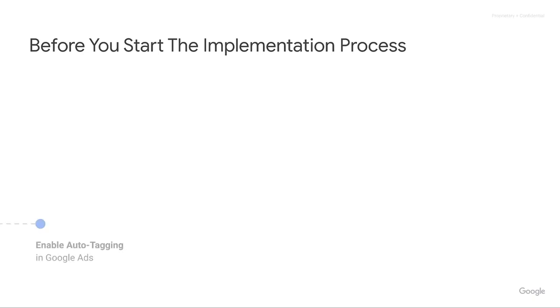Before we start the implementation process, there are a couple of things to bear in mind. First, and this is something I see time and time again: you need to have auto-tagging enabled within Google Ads. This is one of the most common errors. If you don't have auto-tagging enabled, Google Ads is not actually able to deliver the Google Click ID into the user's browser.